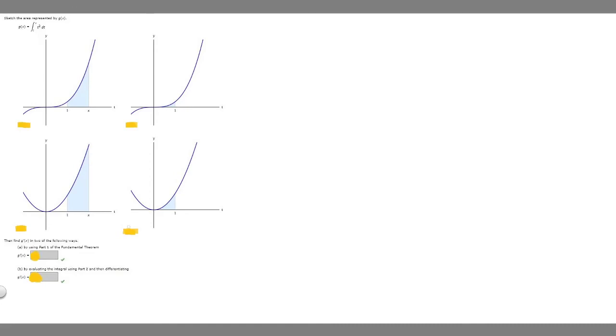So in this problem, we're told to sketch the area represented by g of x, and g of x equals the integral from 1 to x of t squared dt.